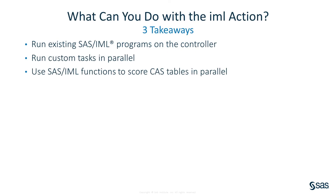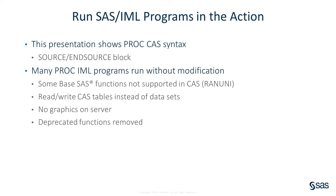There isn't enough time to describe all that the IML action can do, but I want to show three things: you can run existing SAS IML programs on the controller, you can run custom tasks in parallel, and you can use SAS IML functions to score CAS tables in parallel. You can submit via actions for many languages, including Lua, Python, and R. I will be using PROC CAS in SAS because it supports a source block, and you can put the IML program inside the source block in a natural way that preserves indenting.